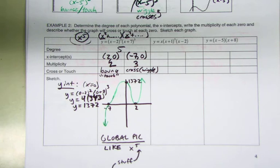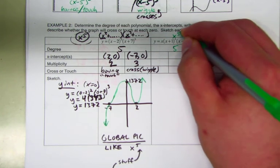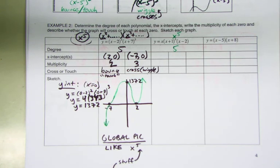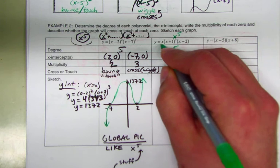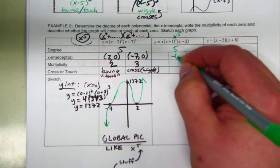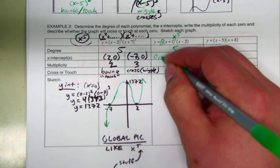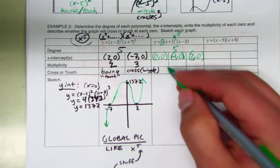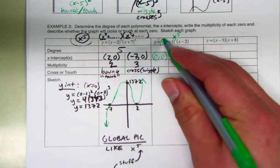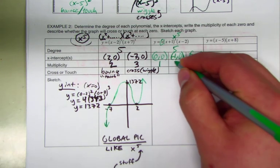Let's try the next example. The degree: multiplying x times x cubed times x gives x to the fifth, so the degree is five — same leading term as before. The x-intercepts are: (−1, 0), (2, 0), and (0, 0) — don't forget, if there's a single x factor, that gives zero as an intercept. The multiplicity for zero is one, for (x+1)³ it's three, and for (x−2) it's one.